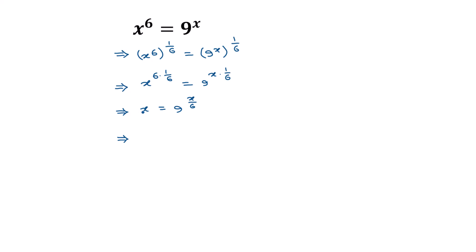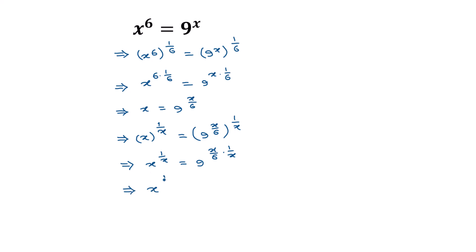Again, raising both sides to the power 1 over x, we get x to the power 1 over x is equal to 9 to the power x over 6, whole to the power 1 over x. This can be written as x to the power 1 over x is equal to 9 to the power x over 6 times 1 over x. The x and x cancel, so it becomes x to the power 1 over x is equal to 9 to the power 1 over 6.